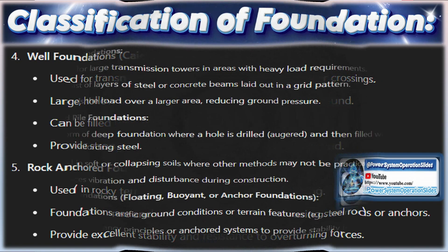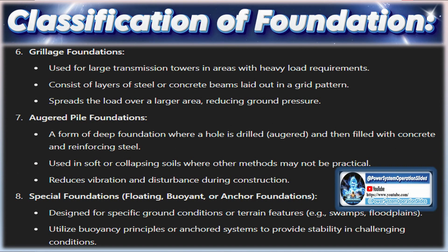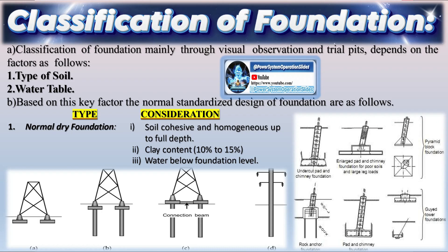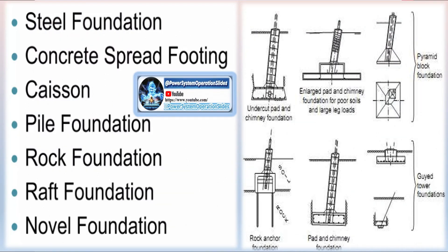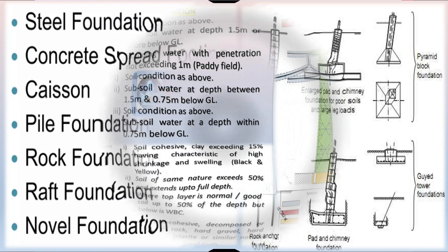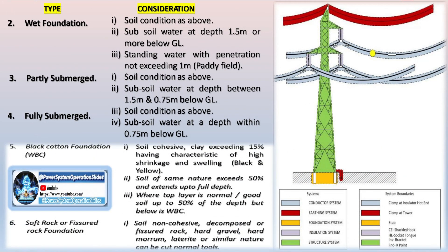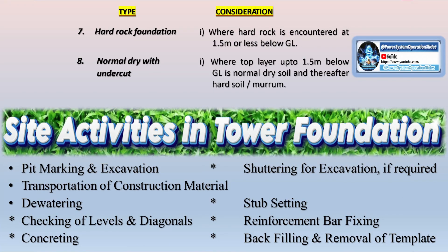The data collected during the detailed survey plays a crucial role in designing the transmission line's infrastructure. It helps engineers determine the optimal locations for placing transmission towers, the spacing between towers, and the type and height of each tower. Towers need to be placed to provide adequate clearance from the ground, buildings, trees, and other structures. The survey also helps identify areas where special structures may be required — for example, if the transmission line needs to cross a large river, highway, or railway, special high towers or tension towers may be necessary. In areas with difficult terrain such as mountains or deep valleys, additional design considerations may be required.